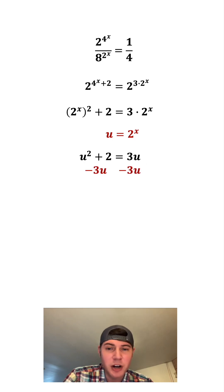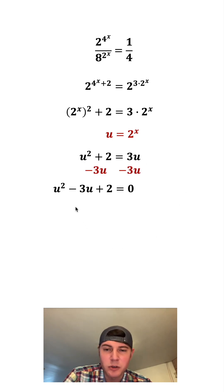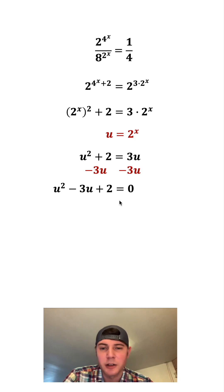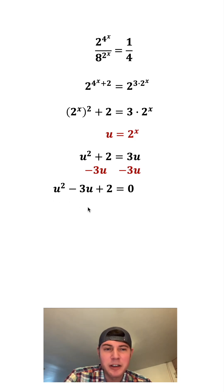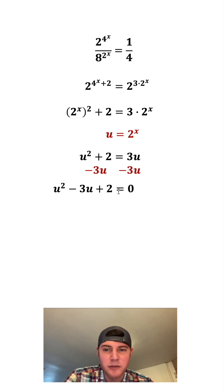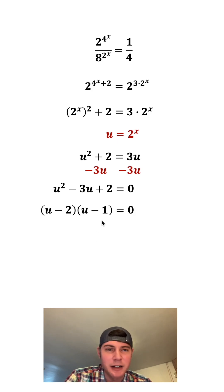And we'll subtract 3u from both sides. On the left-hand side, we have u squared minus 3u plus 2, and on the right-hand side, we have 0. Now we can factor this. We want two numbers that add to negative 3 and multiply to positive 2. That's going to be negative 2 and negative 1.